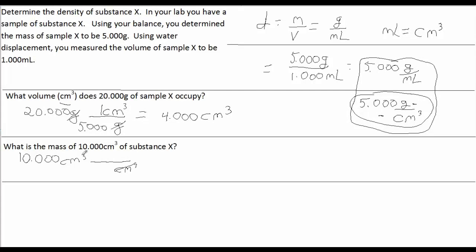Make sure I cancel that out. But now, the question is, what's the conversion factor? Well, we see density was used as a conversion factor before, so we'll use it again. In this case, we'll just use this conversion factor, this value of density, as written. 5.000 grams per 1 cubic centimeter.